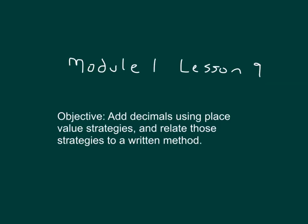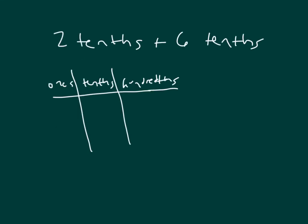The objective is to add decimals using place value strategies and relate those strategies to a written method. Here we're asked to add 2 tenths plus 6 tenths. Let's use a place value chart. There's 2 tenths. And there is 6 more tenths. Altogether, we have 8 tenths. So that was 2 tenths plus 6 tenths, equaling 8 tenths. We added like units there.